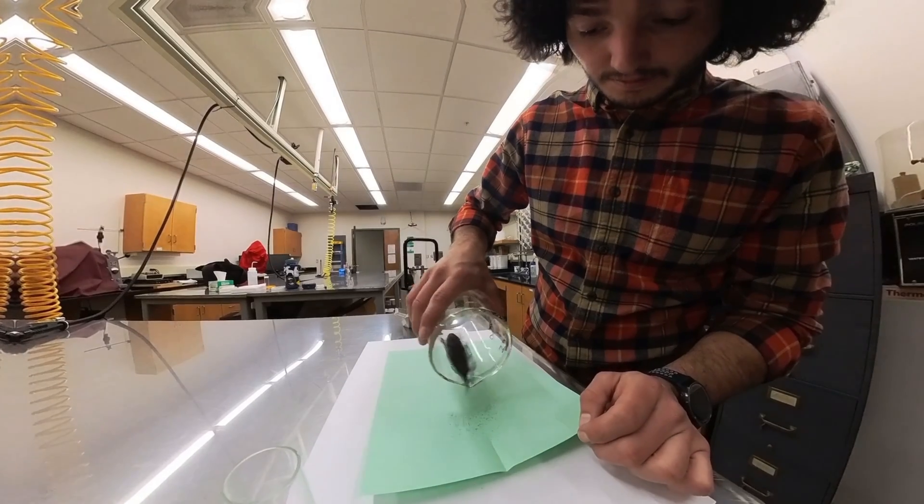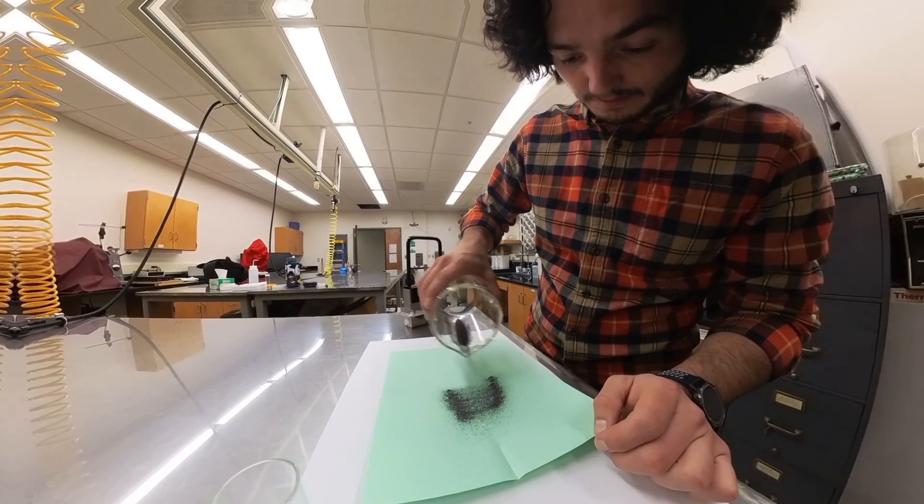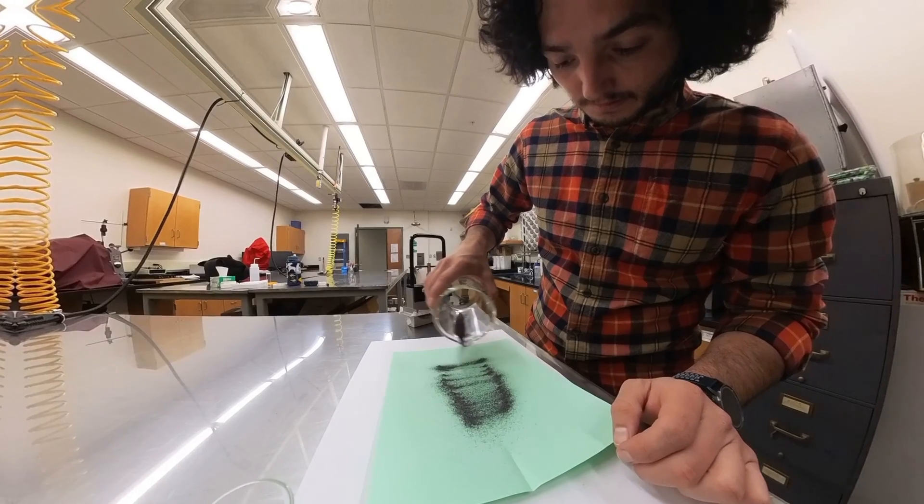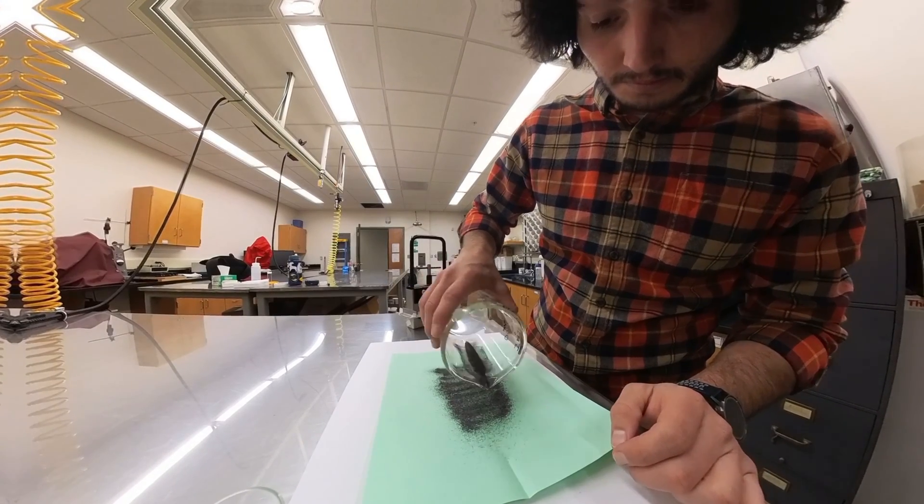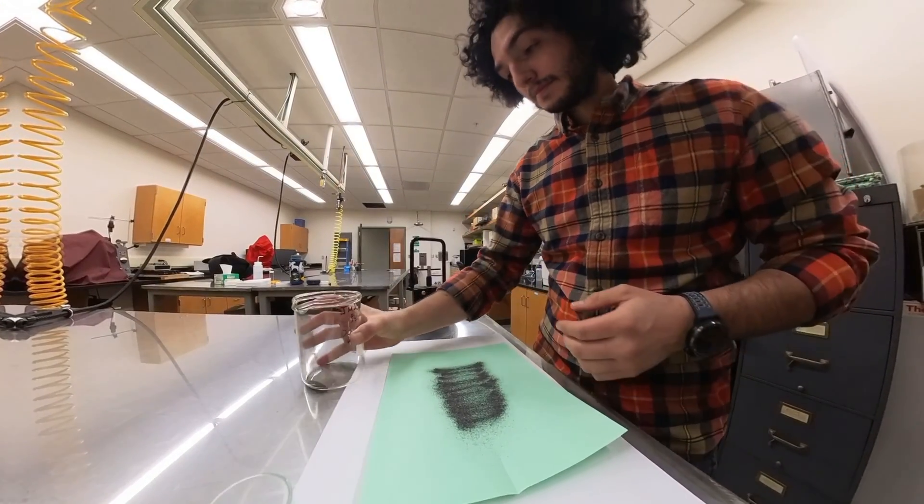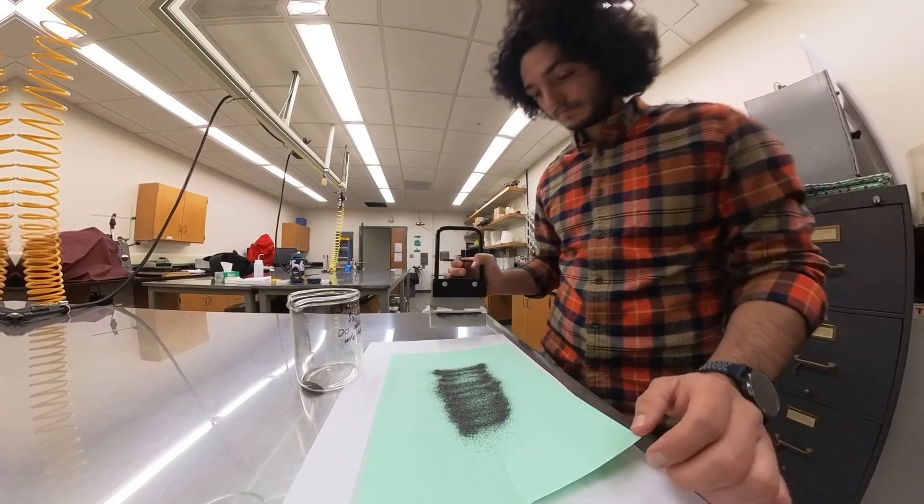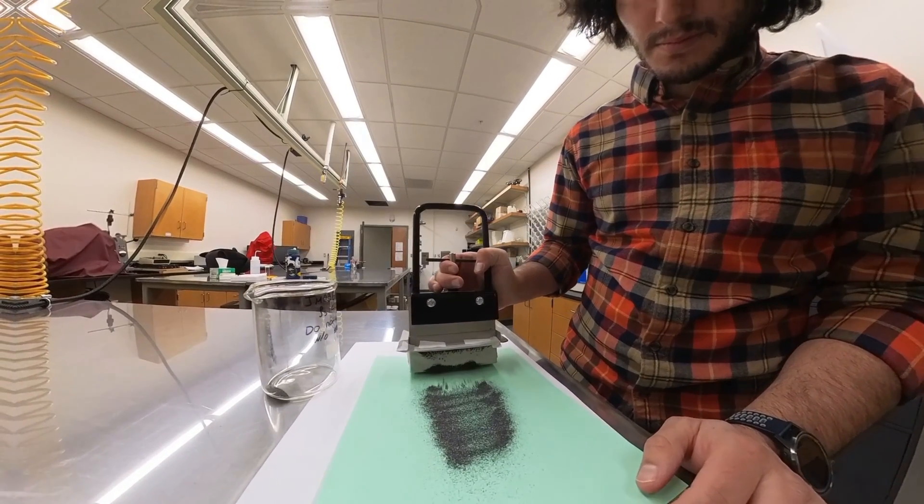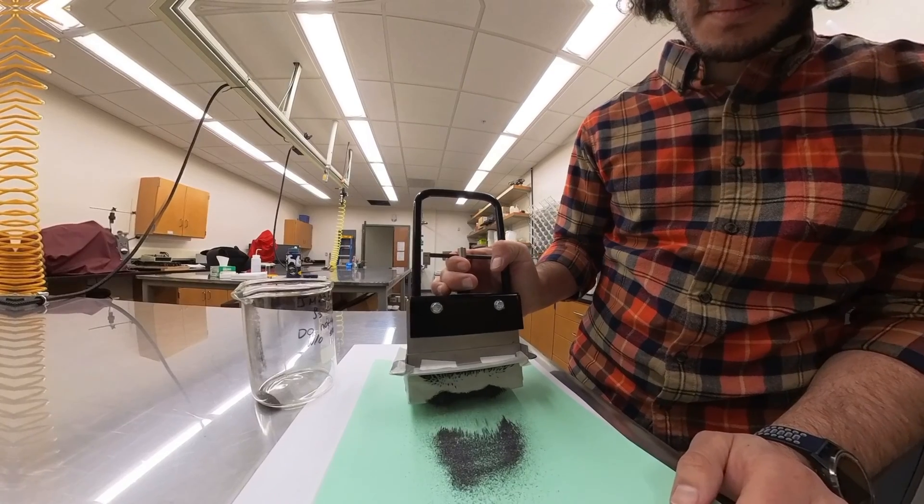From here, we dry out the now much smaller sample and spread it out. While it has many things, zircon is not magnetic. So by running a magnet over the sample, we can remove the magnetic grains, further zeroing in on our stubborn zircon grains that remain behind.